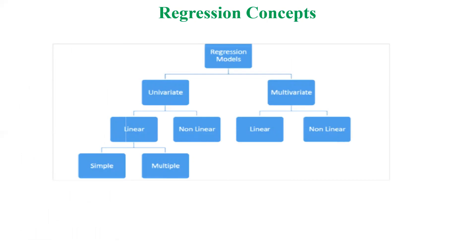Based on the kind of variable — whether you are generating a single value or observing multiple values — we have univariate and multivariate regression models. In the univariate model, there is only one outcome, observed by one dependent variable and one independent variable. In multivariate, multiple variables are used. Within univariate, we also have linear and non-linear types, which we will cover in subsequent videos.